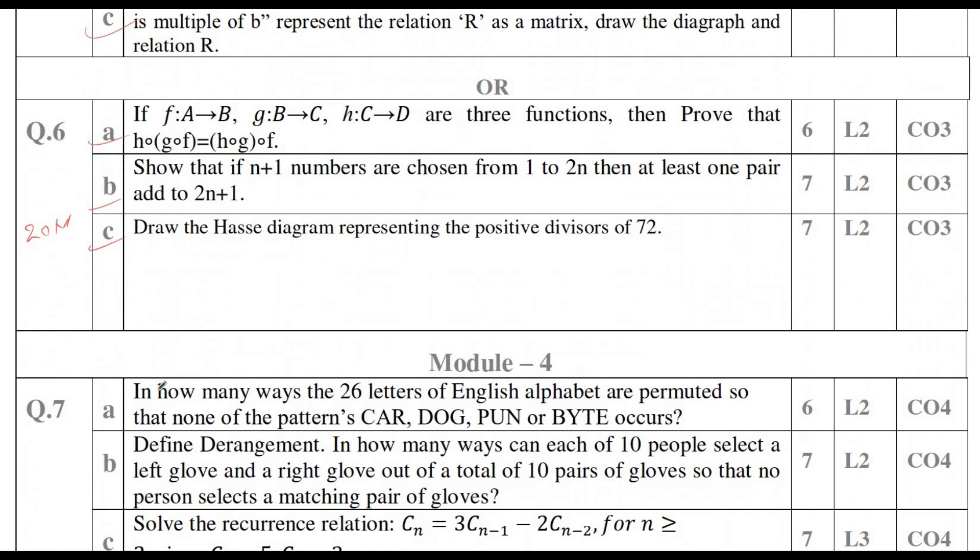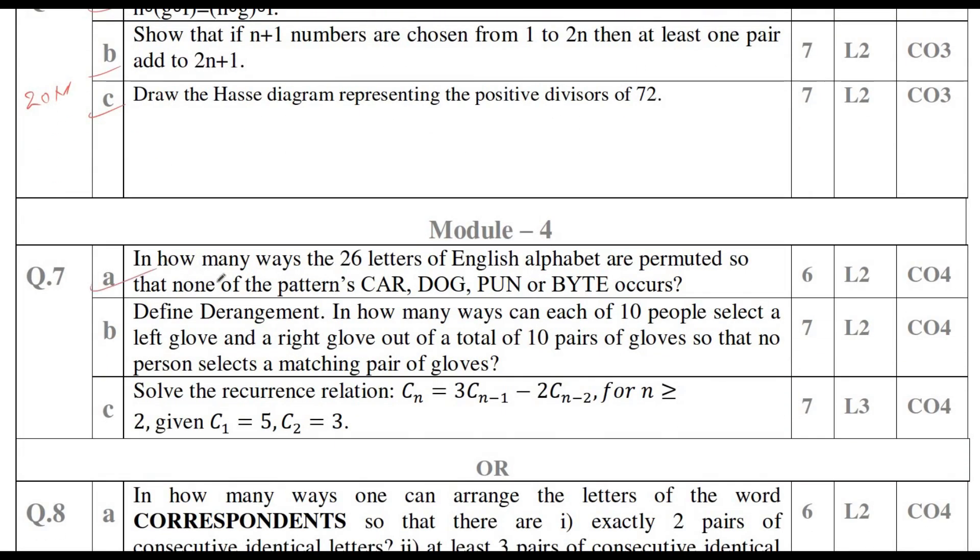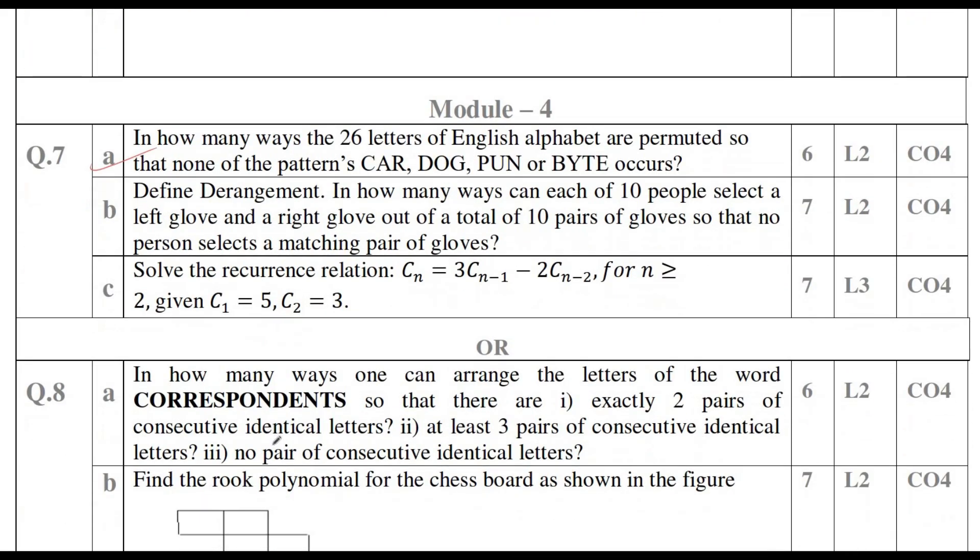Coming to Module 4, you can have compulsory one question on principles of inclusion. That is the problem like none of the patterns of the form CAR, DOG, PUN or BYTE. Like this, different words will be given, one problem compulsory will be given. In the choice also, they have given problems on principles of inclusion, like exactly two pairs or none of the pairs or at least three pairs. You can go through this kind of problem; compulsory you will get six marks here.